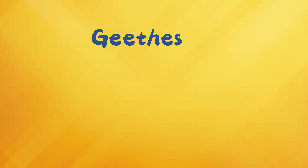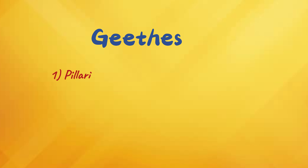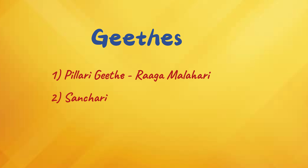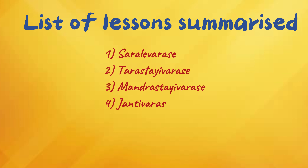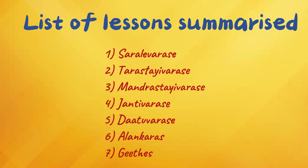After Alankaras, one can go ahead and learn small compositions called Gites. There are different types of Gites. The first set is called Pillari Gite, which is in Raga Malahari — an introduction to a new Raga apart from Mayamalavagaula. There are four Pillari Gites, and similarly there are multiple Sanchari Gites and Lakshana Gites, which define the Lakshana or characteristics of a Raga. Check out our YouTube channel playlist for Swaravalis and keep a look out for further updates on Alankaras and Gites. Do leave a comment if you have any further questions or queries.